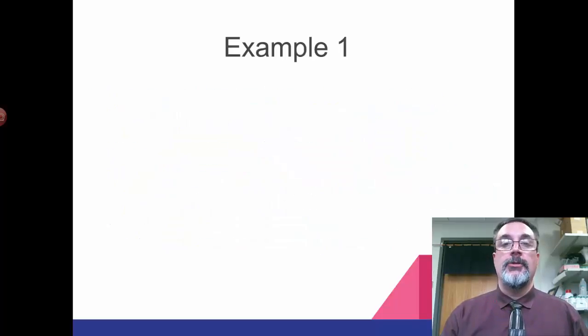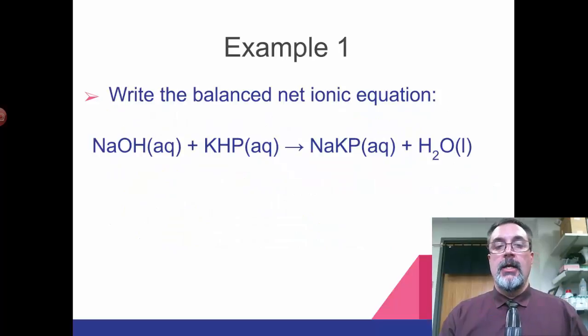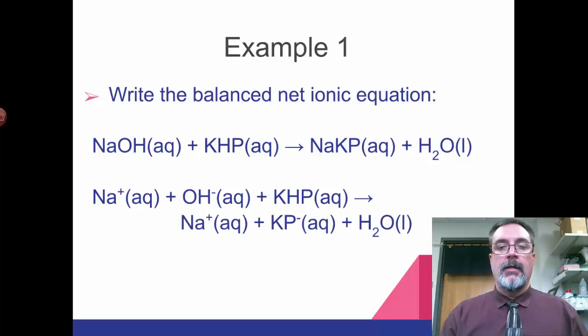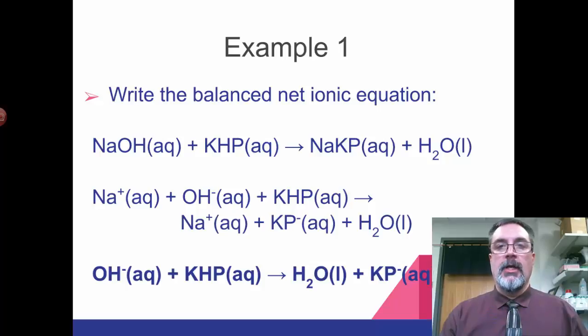Now we're going to do some math to calculate the concentration of sodium hydroxide. It's just stoichiometry. First we need the balanced net ionic equation. KHP is K+ and HP-. When we put this together we get NaKP, which is the sodium potassium phthalate salt, and water. The net ionic equation is that the hydroxide ion reacts with the KHP to produce water and KP-. It's one to one - a one to one mole ratio of hydroxide ions to KHP, which is very handy and makes the calculations easy.